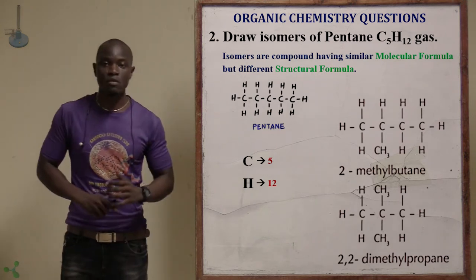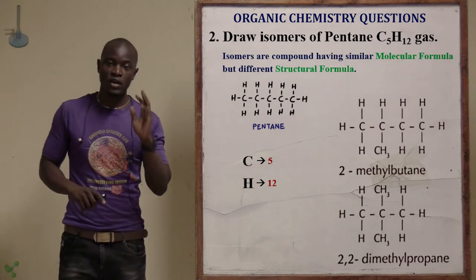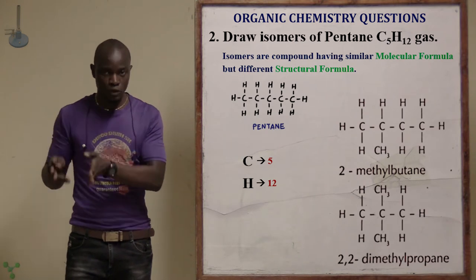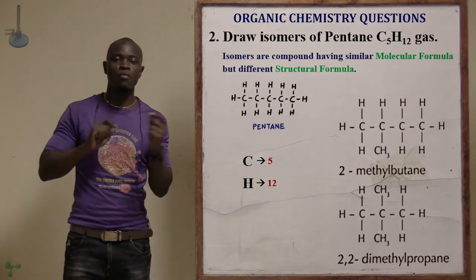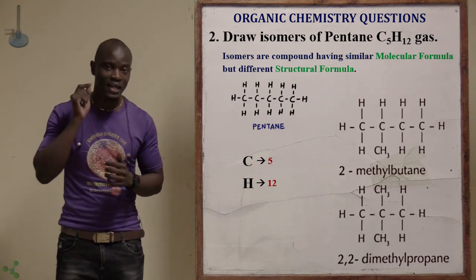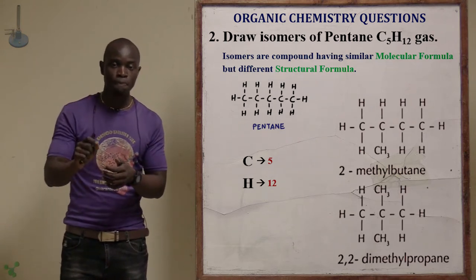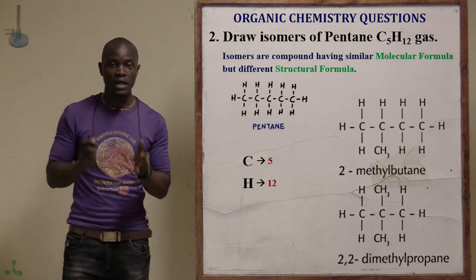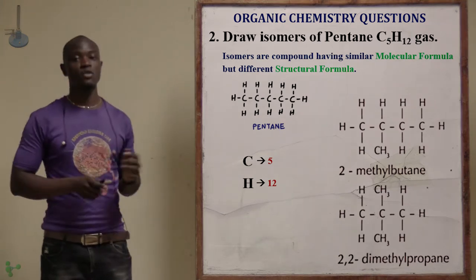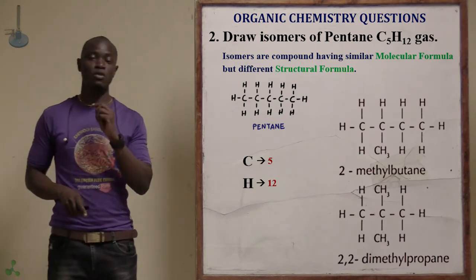These are the isomers of pentane. Take note: they have exactly 5 carbon atoms and exactly 12 hydrogen atoms. Even if you manipulate the structure, it must still have 5 carbon atoms and 12 hydrogen atoms. Isomers have the same molecular formula but different structural formula. These are the isomers of pentane with their respective names.